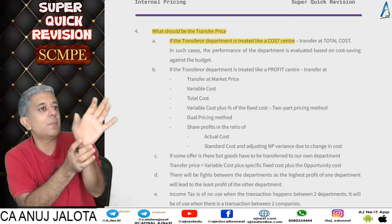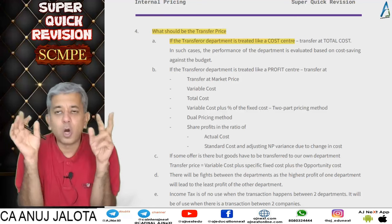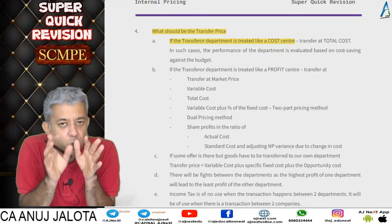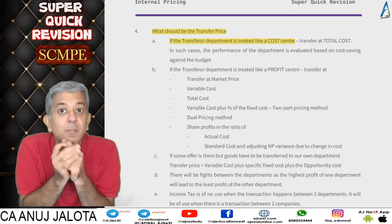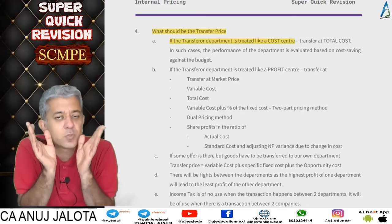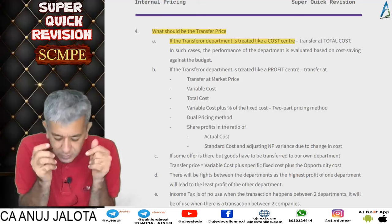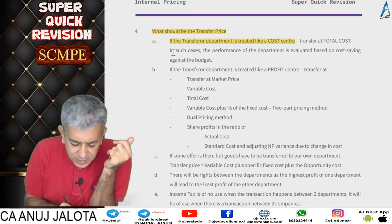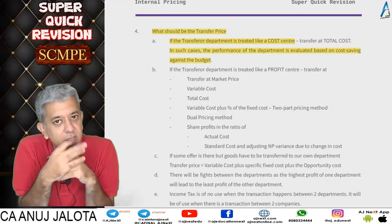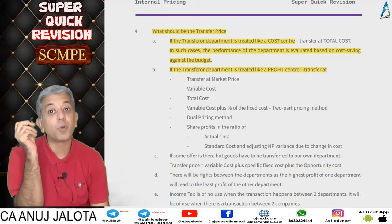Such departments are judged based on cost savings — similar to standard costing variances. If 1 lakh units are made, we check: how much should the cost have been vs. how much was spent. If less was spent and quality was maintained, you saved something for the company, and a percentage of savings becomes the bonus. In such cases, performance is evaluated based on cost savings against the budget.